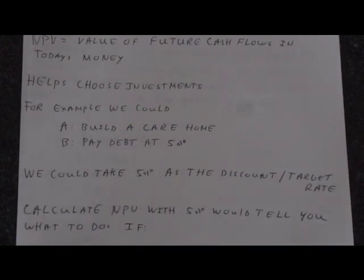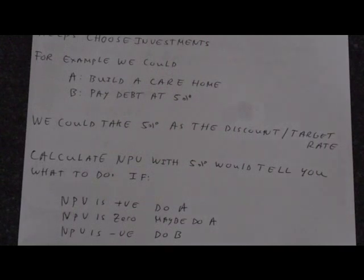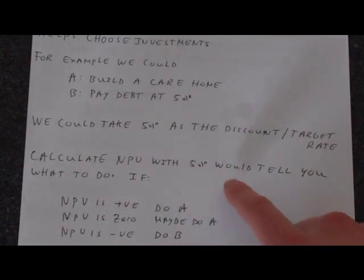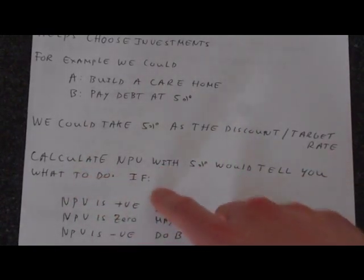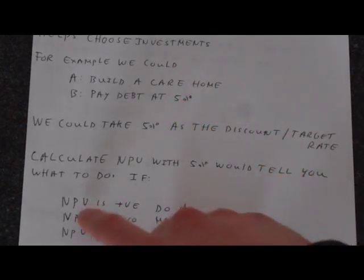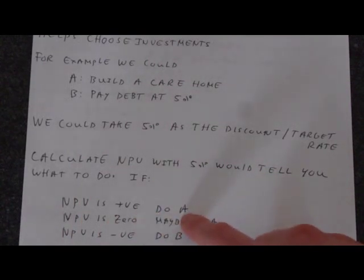There's a certain rule that we use to decide on investments using net present value. If we were to calculate the net present value at 5%, it would tell us what to do, which of these options A or B to take as your course of action. If the net present value is positive, we would do A. That means we're going to earn more money by building the care home than paying the debt.